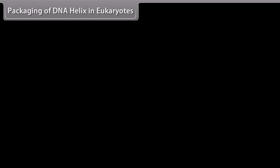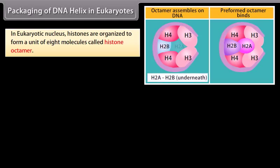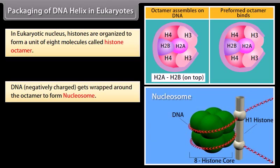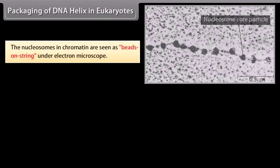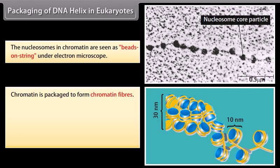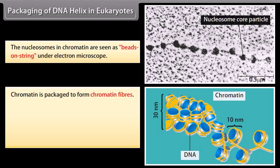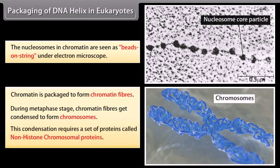Packaging of DNA helix in eukaryotes. In eukaryotic nuclei, histones are organized to form a unit of 8 molecules called a histone octamer. DNA, being negatively charged, gets wrapped around the octamer to form a nucleosome. Repeating units of nucleosomes form thread-like structures in the nucleus called chromatin. The nucleosomes in chromatin are seen as beads on a string under the electron microscope. Chromatin is packaged to form chromatin fibers. During metaphase, chromatin fibers condense to form chromosomes, requiring a set of proteins called non-histone chromosomal proteins.